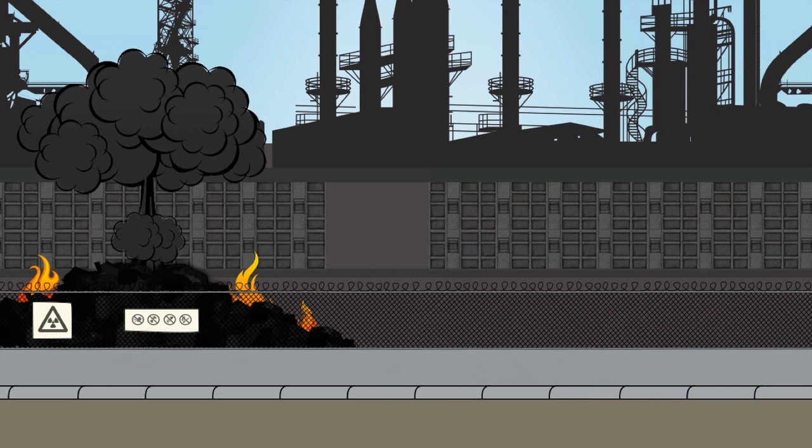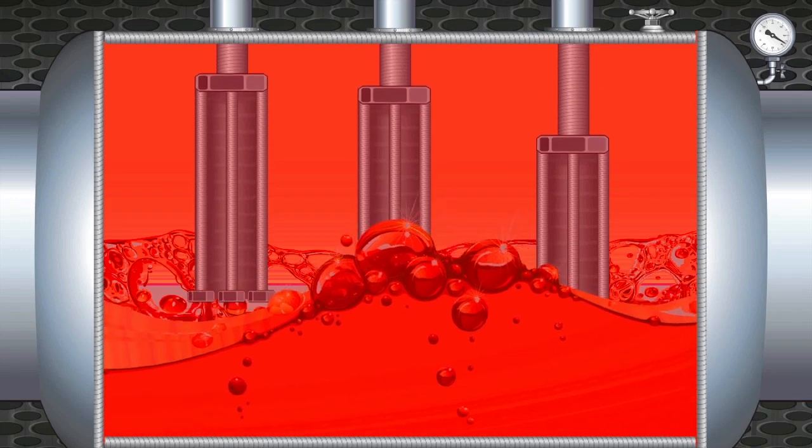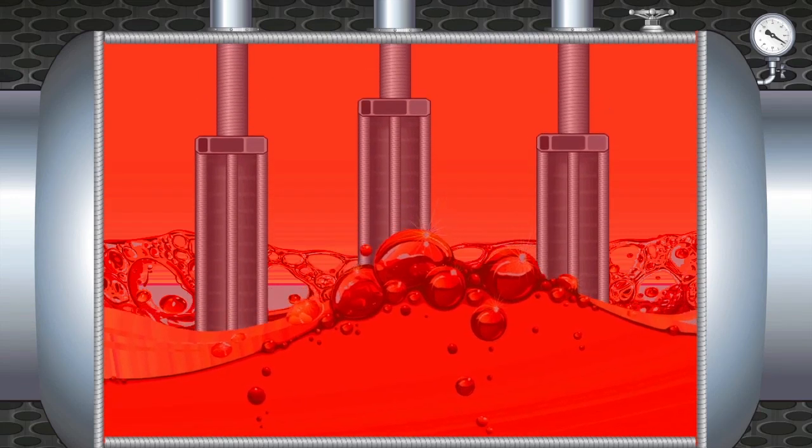To control the rate of reaction, we need a substance which can absorb the neutrons, stopping them from splitting up other atoms. In a nuclear reactor, this is done by control rods.